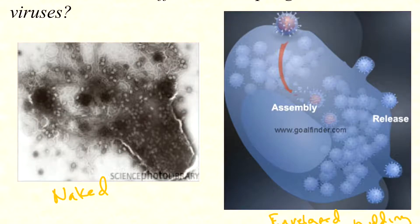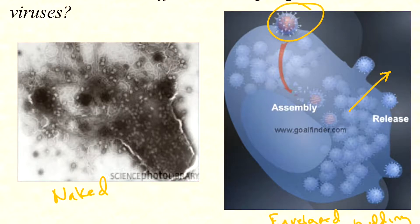An enveloped human virus gets out by budding. The nucleocapsid is assembled on the inside, then pushes through the membrane by exocytosis — just as a naked virus gets in by endocytosis, an enveloped virus gets out by exocytosis — leaving fully enveloped with a bit of membrane wrapped around it. If this happens slowly enough, the cell is likely to self-heal; if fast enough, it will lyse the cell as well.